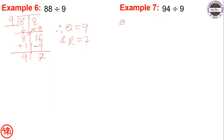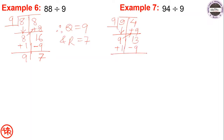Next example: 94 divided by 9. We divide, and since 9 divided by 9 gives remainder 0 we take 9 plus 1 equals 10, then minus 9 and plus 1. So quotient becomes 10 and 13 minus 9 is 4. Therefore quotient equals 10 and remainder equals 4.